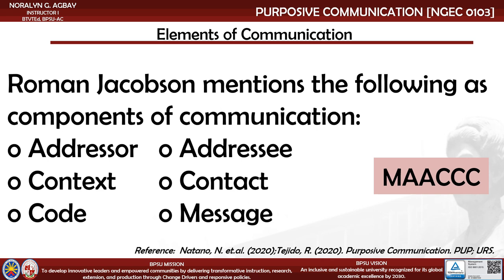Jacobson proposes that each of his six factors — addressor, message, context, contact, code, and addressee — determines a different linguistic function. His model demonstrates that messages and meanings cannot be isolated from contextual factors. Jacobson outlines that the addressee will get the message from the addressor. The text or code should require a context referred to as the reference or referent to be operative.